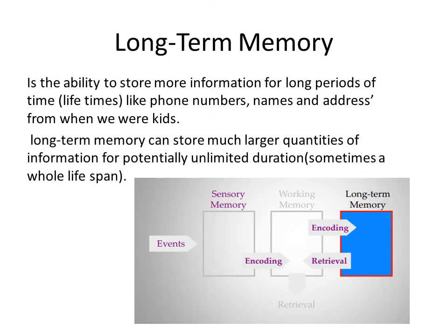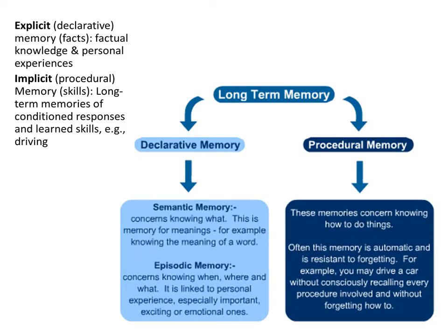Long-term memory holds information for long periods of time, even permanently. It seemingly can hold an unlimited amount of information and can store much larger quantities for potentially unlimited duration. There are two types of long-term memory: explicit or declarative, and implicit or procedural.